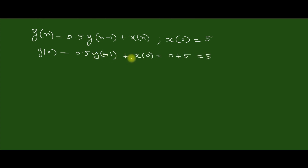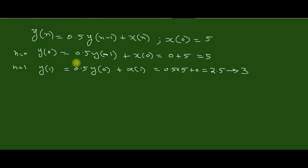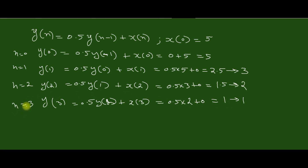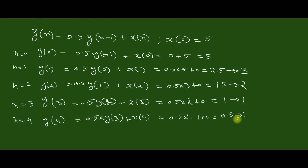At n=0, the output y(0) = 0.5*y(-1) + x(0) = x(0) = 5. At n=1, y(1) = 0.5*y(0) + x(1) = 0.5*5 = 2.5. Then for n=2, the output is 2, and for n=3, y(3) = 1.